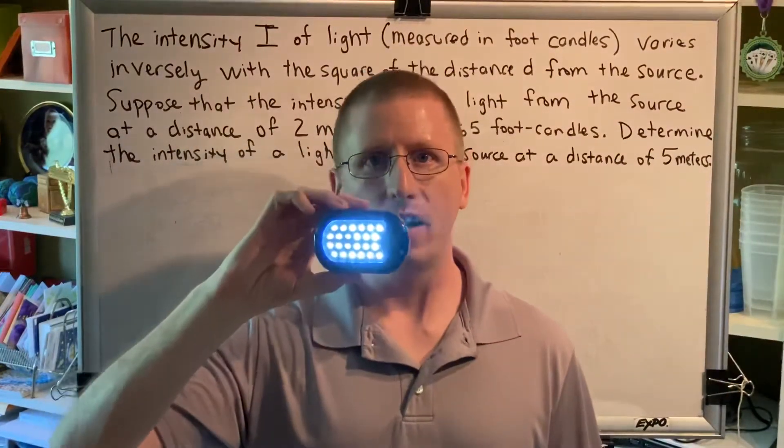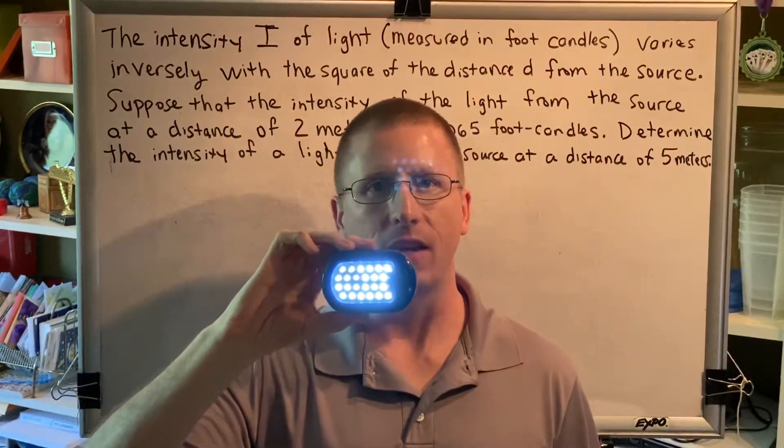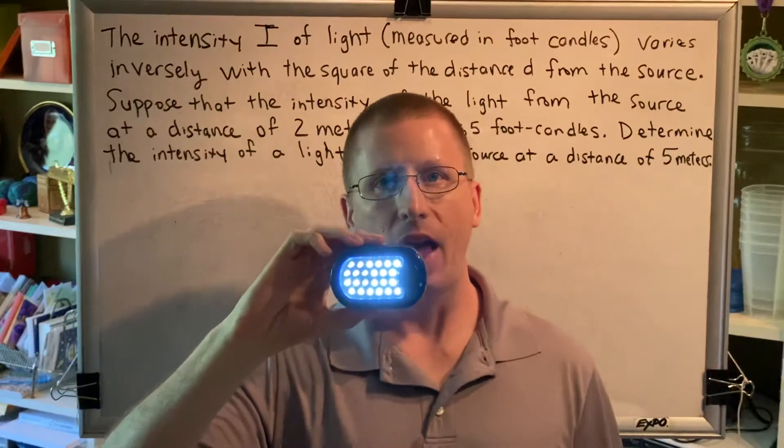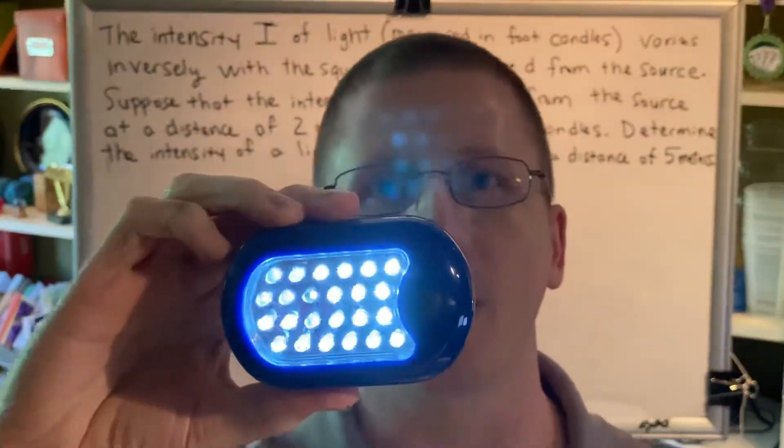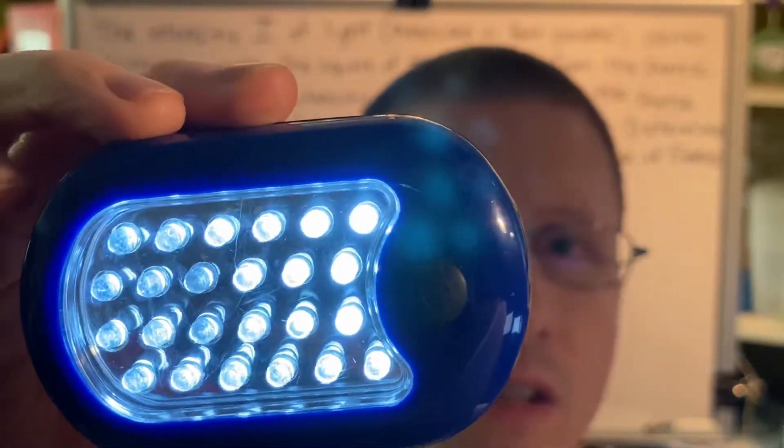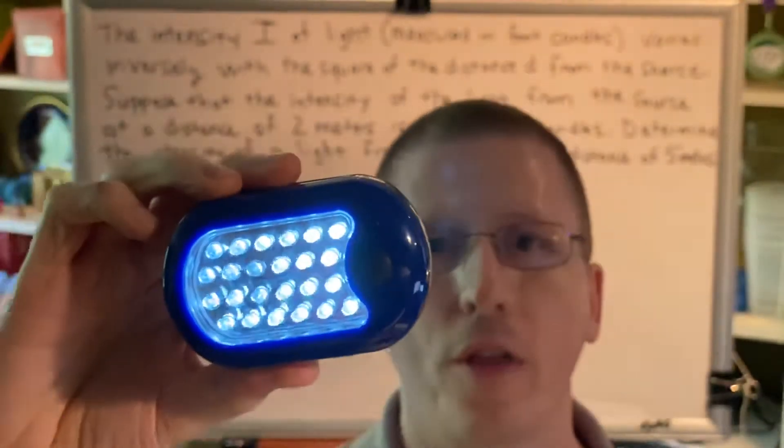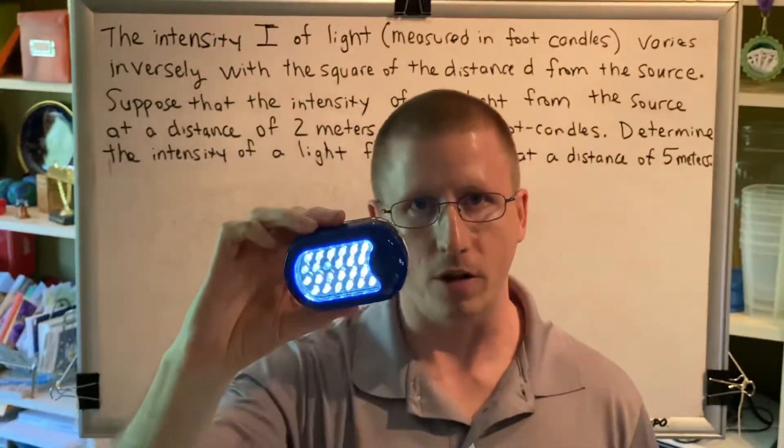I have a light that I'm shining at the camera lens right now. It has a certain amount of light intensity or brightness, but as I take the light source and move it closer and closer to the camera, the intensity or brightness of the light appears to increase. As I move it backwards further and further from the camera, the intensity of the light appears to decrease.